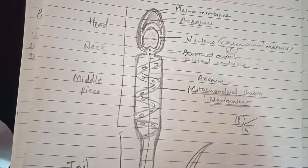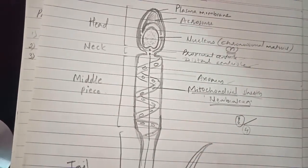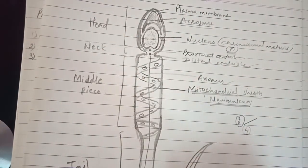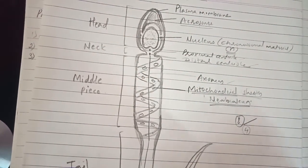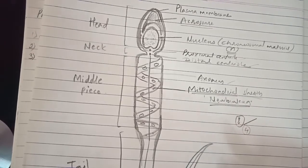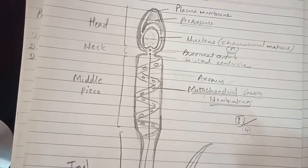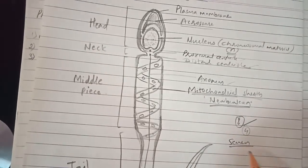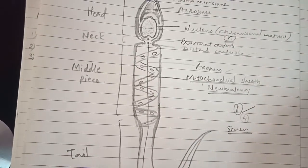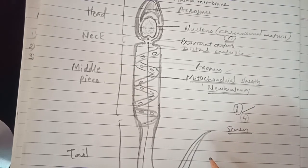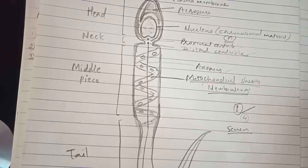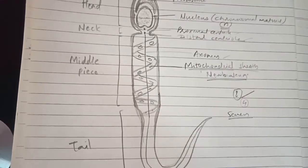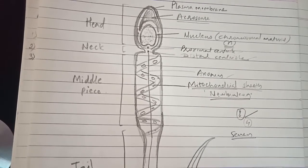The sperm along with the fluid secreted by three glands is called semen. This is the structure of sperm — draw and label the parts. Practice this and you can get five marks. Thank you, students.